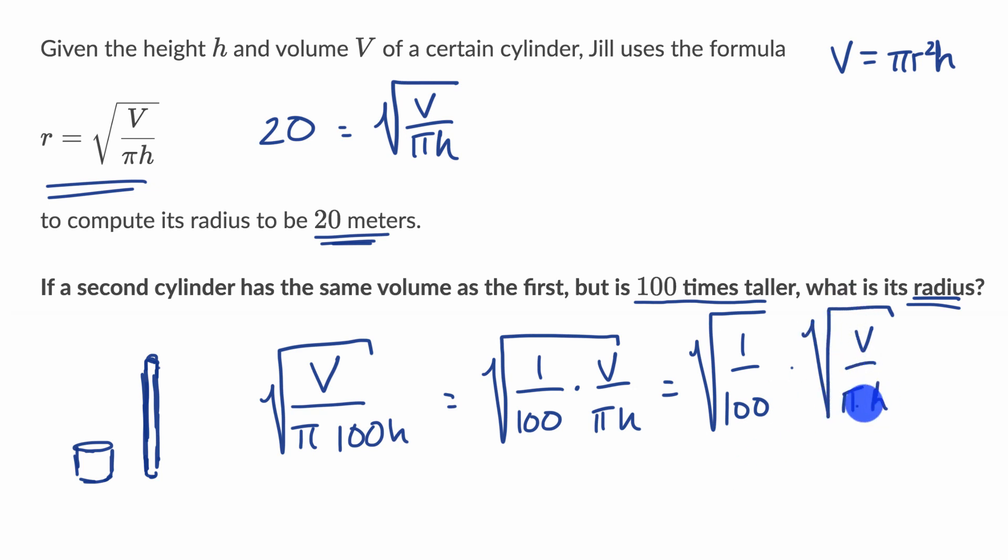Now we know what the square root of V over pi h is. We know that that is 20, and our units are meters. So this is 20. And what's the square root of 1 over 100? Well, this is the same thing as 1 over the square root of 100, and of course now it's going to be times 20.